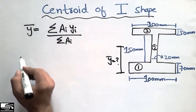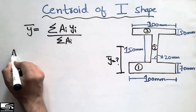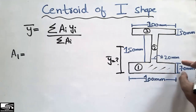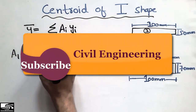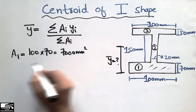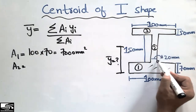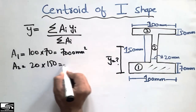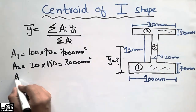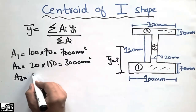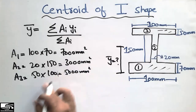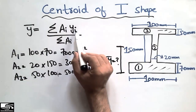Now I will find the area of each part. A1 is a rectangle, so the area is 100 × 70 = 7,000 mm². A2, the area of the second part (the web), is 20 × 150 = 3,000 mm². The area of the third object, A3, is 50 × 100 = 5,000 mm². Now we have found the three areas.